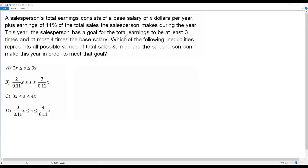So this year, the goal of the salesperson is that total earnings have to be at least three times the base salary and at most four times the base salary. First, let's find the total earnings.